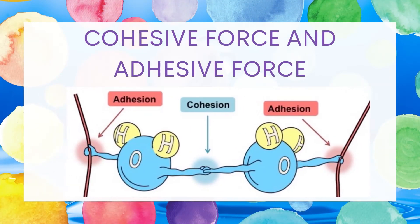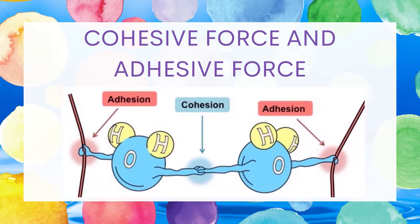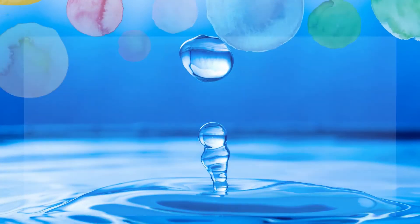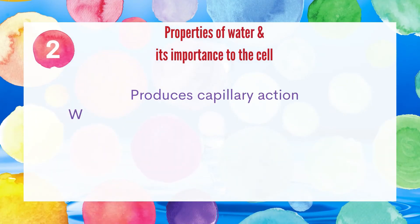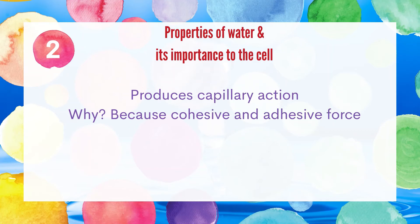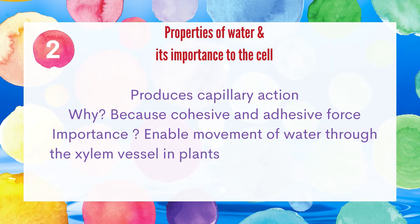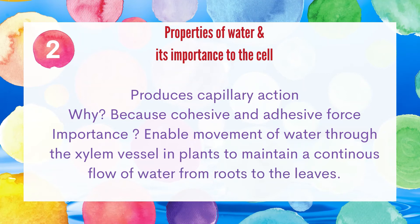In this diagram, you can see the property of water: cohesive force and adhesive force. Cohesion is the attraction between water molecules, whereas adhesion is the attraction between water molecules and other substances — normally, in the case of a plant, between water molecules and the wall of the xylem. These forces produce capillary action, enabling the movement of water through the xylem vessel in plants to maintain a continuous flow of water from roots to the leaves.